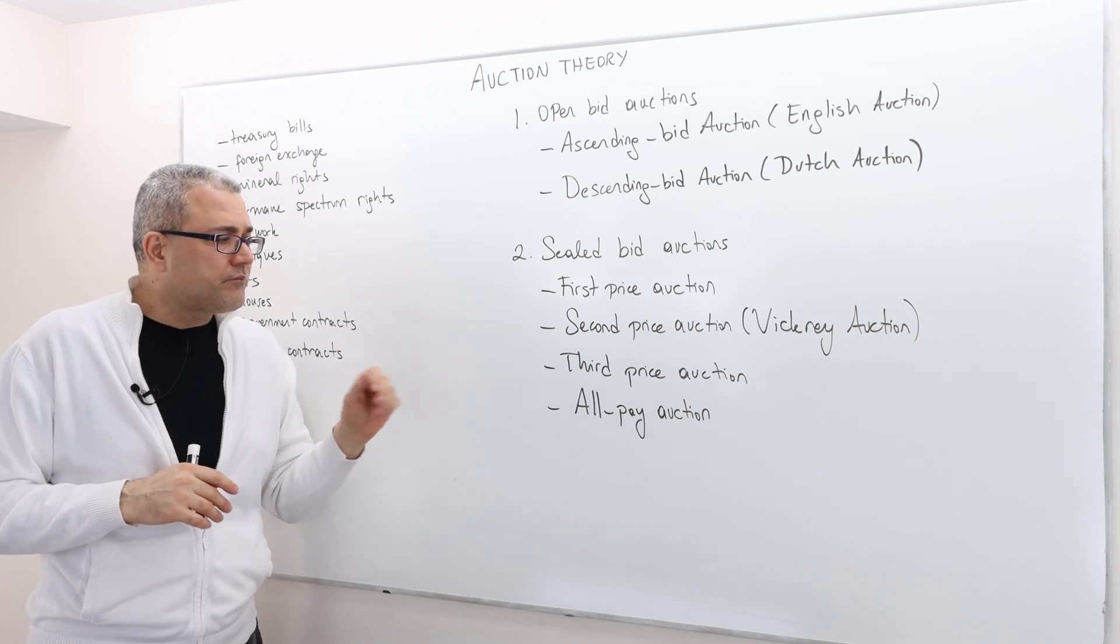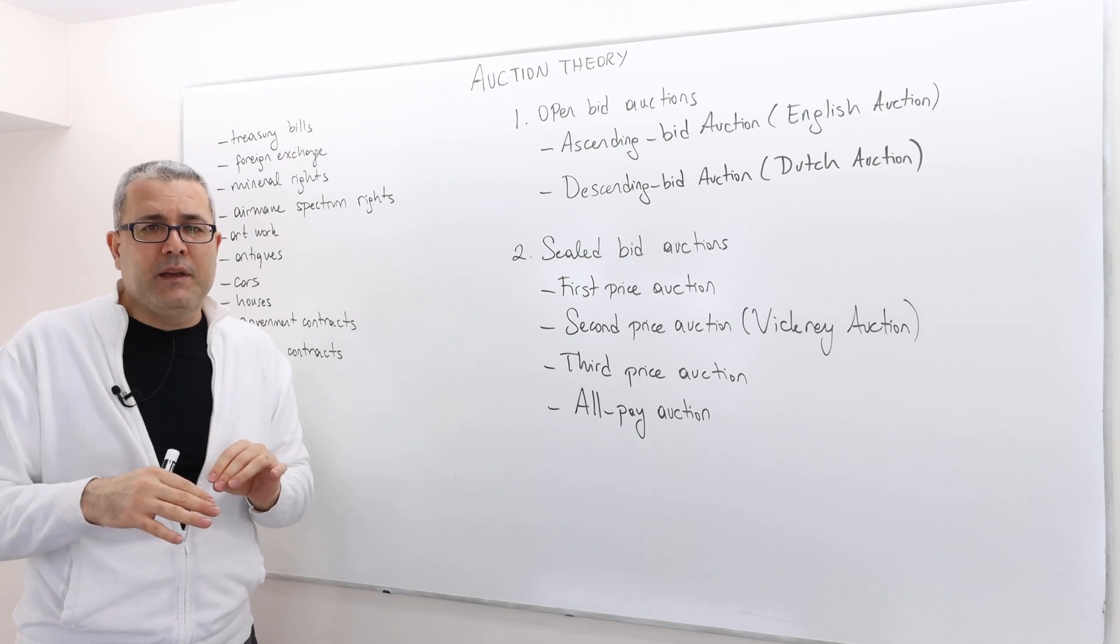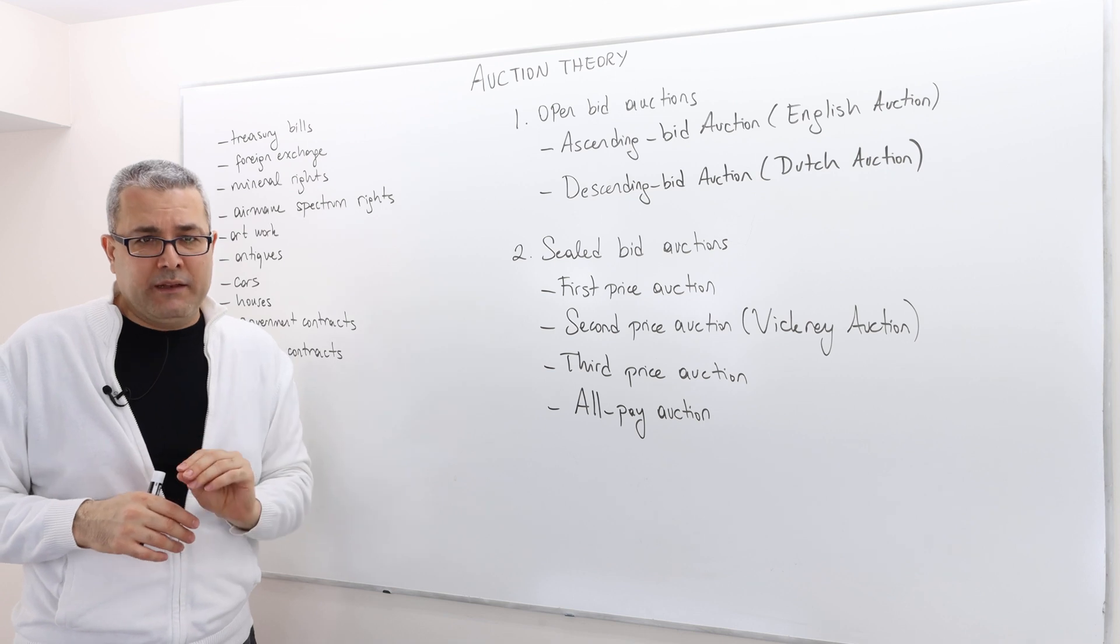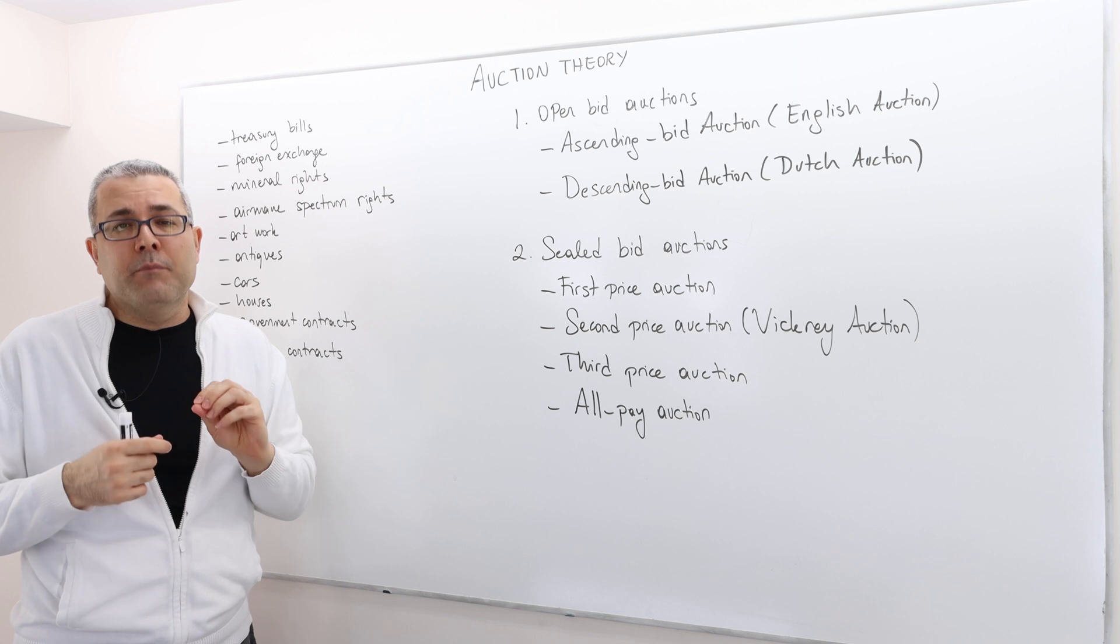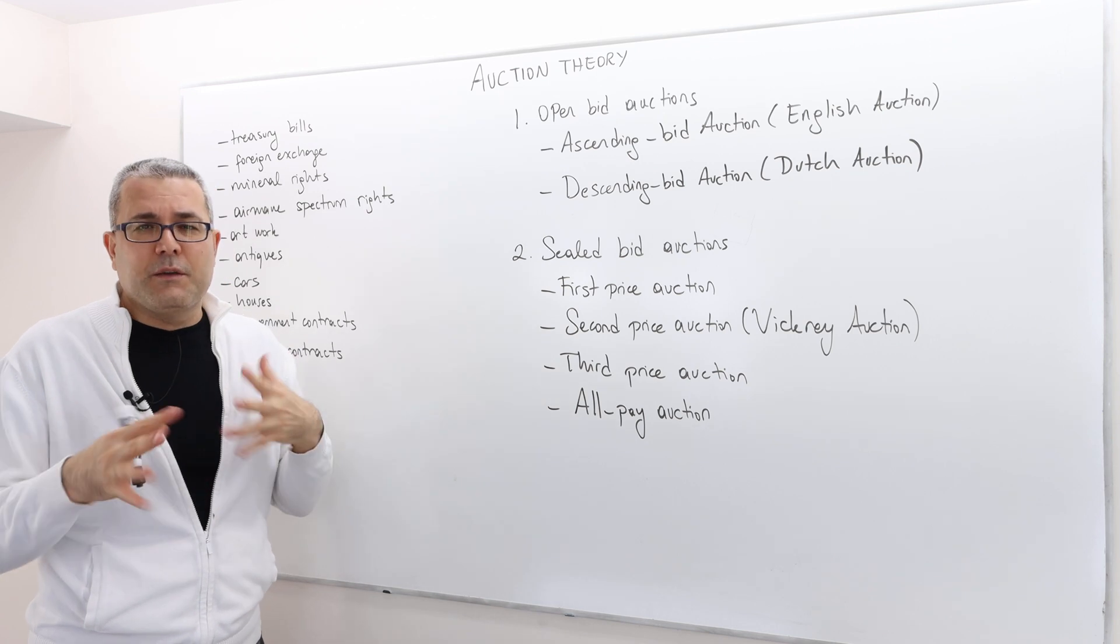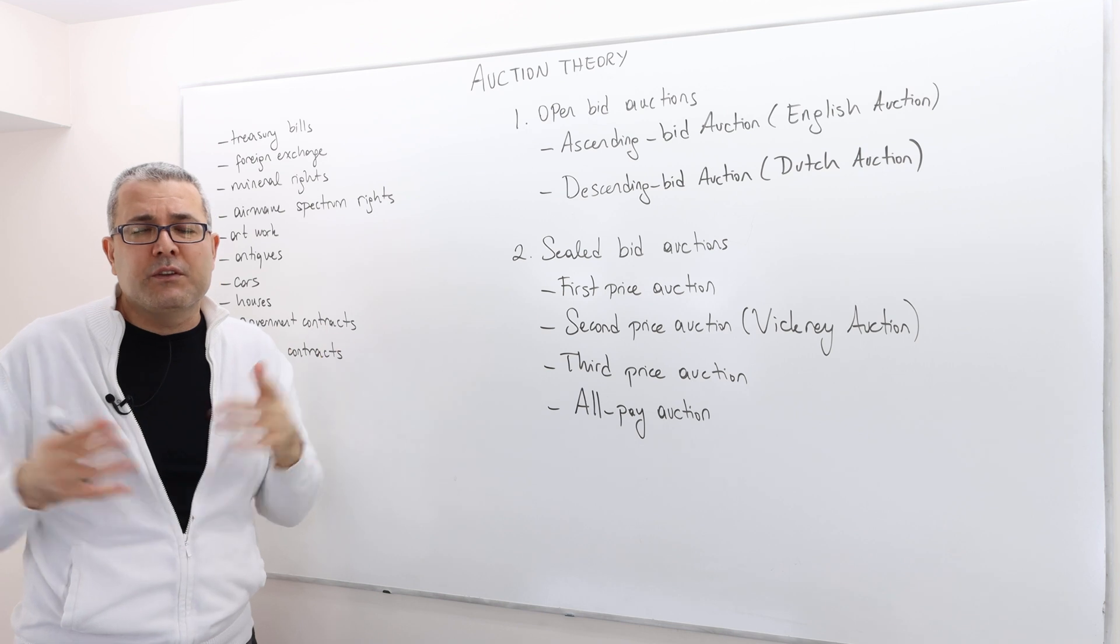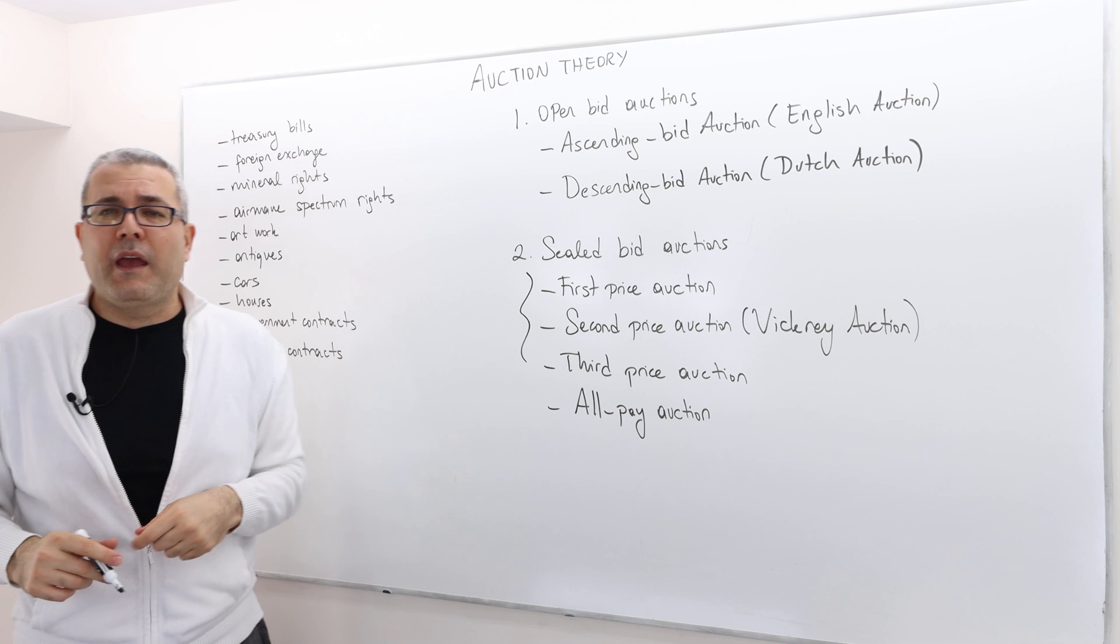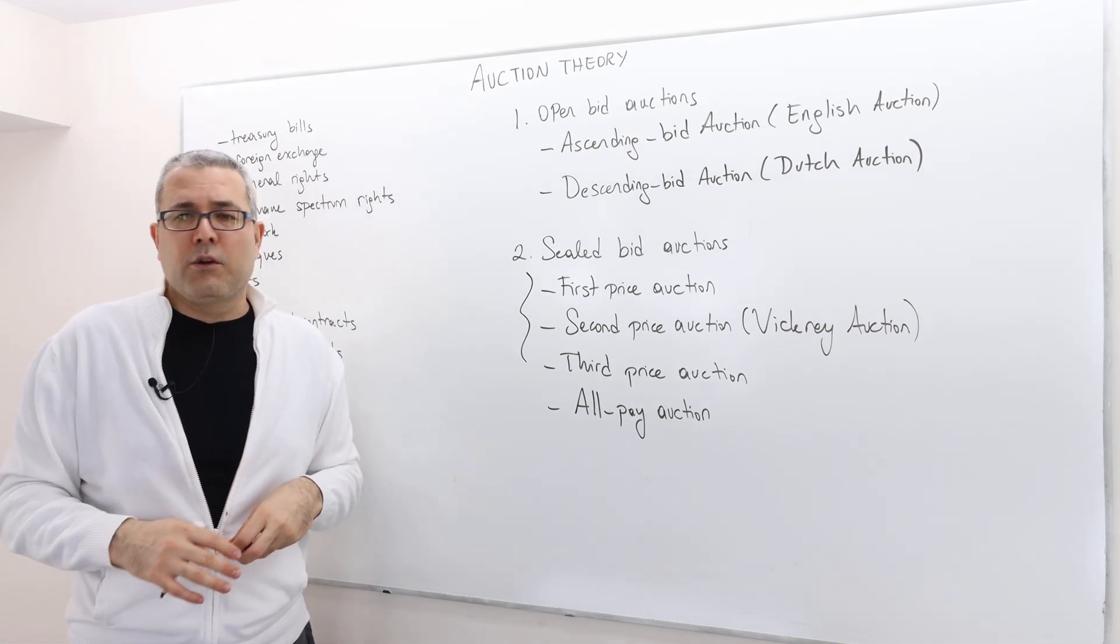And then all pay auction. Well, again, the winner is the bidder who makes the highest bid. However, everybody pays his or her own bid. So even if you lose the auction, you have to make a payment, whatever you bid. So all pay auction is a bit more scary than, for example, the first price auction or second or third price auction, because you pay only if you win in these auctions. But in the all pay auction, as the name suggests, everybody pays regardless you win or not.